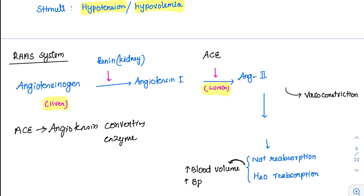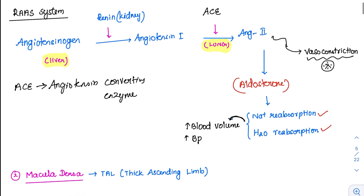Angiotensin 2 has an important effect of vasoconstriction. So whenever there is hypotension or hypovolemia, angiotensin 2 is produced to vasoconstrict and increase blood pressure. It also stimulates aldosterone, which we saw in endocrine physiology. Aldosterone stimulates sodium and water reabsorption, causing an increase in blood volume and blood pressure. So hypovolemia is corrected in two ways — through angiotensin 2 and aldosterone.